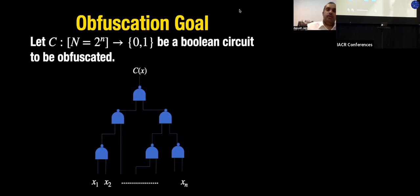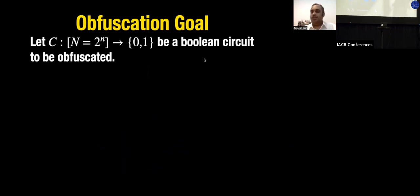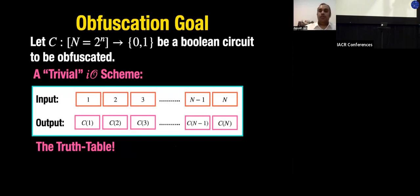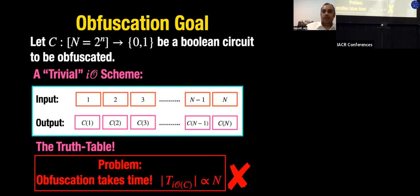For the rest of the talk, the circuit we want to obfuscate is C, taking n bits as input and outputting one bit; we denote 2^n as capital N. Intuitively, one natural obfuscation scheme is simply the truth table — writing down inputs from 1 to N and the corresponding outputs C(1) through C(N). This doesn't reveal anything about the circuit beyond its input-output behavior.